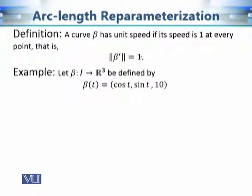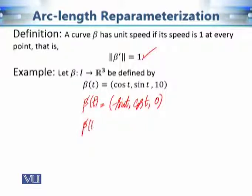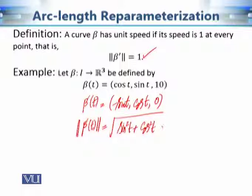We want to check whether the speed of this curve is unit at each and every value of t. For that, we calculate beta prime of t, which is (−sin t, cos t, 0) — the derivative of sin t is cos t and the derivative of the constant 10 is 0. The speed is the magnitude of velocity, which equals sqrt(sin²t + cos²t + 0²) = sqrt(1) = 1. Although beta depends on the parameter t, its speed is always 1, hence it is a unit speed curve.